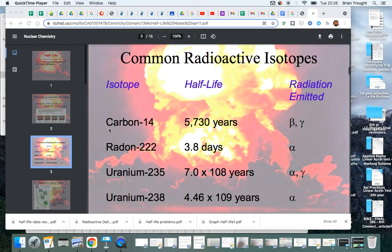So different isotopes - carbon-14 is a particular isotope of carbon, radon-222 is a particular isotope of radon. They all have different half-lives,